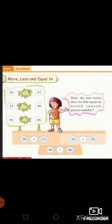Now look at the second fish. There are two numbers given, 35 and 30. The fish opens its mouth towards 35 because 35 is more than 30. In other words, we can say 30 is less than 35. Now look at the third fish.